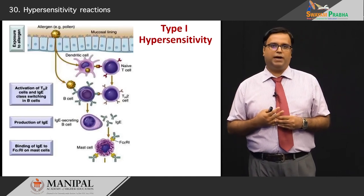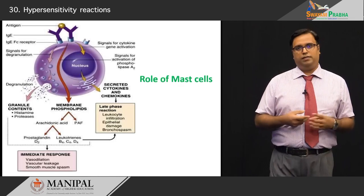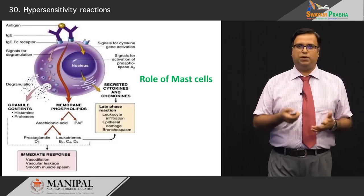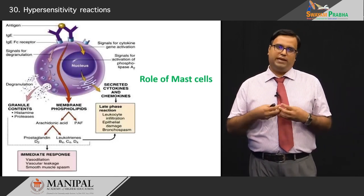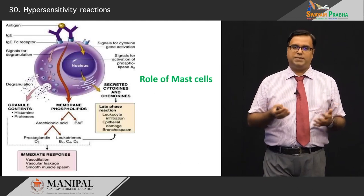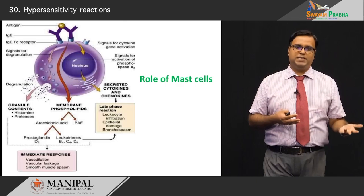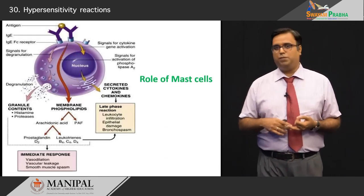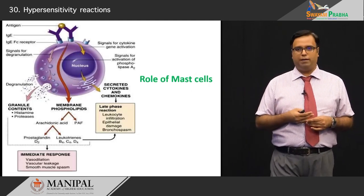All of this IgE binds to the surface of mast cells, which have receptors for the same. Mast cells reside in the tissues and are plentiful in areas of antigen exposure such as the GI tract and the respiratory tract. They are a storehouse of molecules that can immediately degranulate and liberate into the bloodstream — such as histamine and proteases. More importantly, they have membrane phospholipids which are storehouses for platelet activating factor and arachidonic acid metabolites, resulting in vasodilatation, vascular leakage, and smooth muscle contraction.